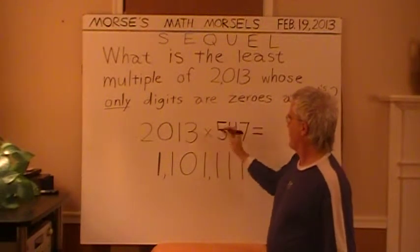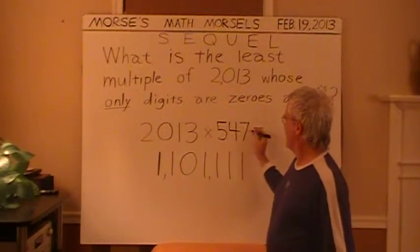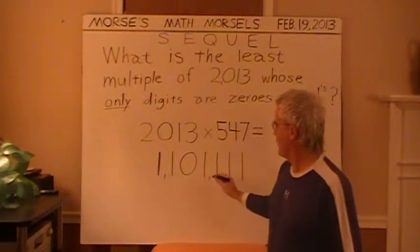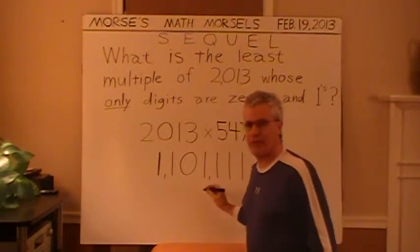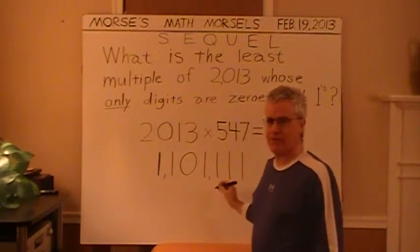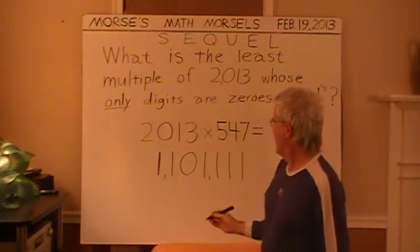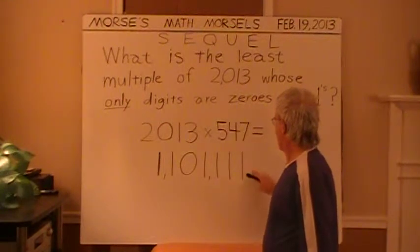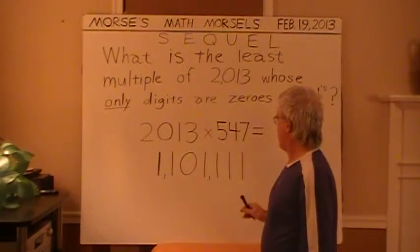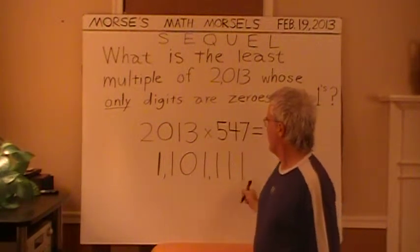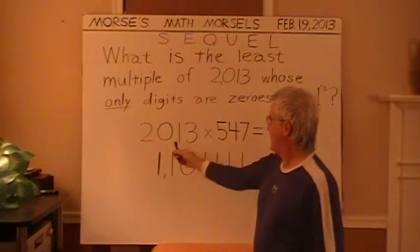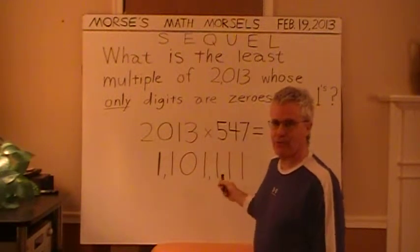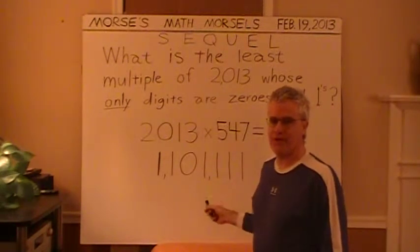2013 times 547 yields 1,101,111. So let's pretend — this number is in base 10, as are these two. The factors and the product are all base 10.